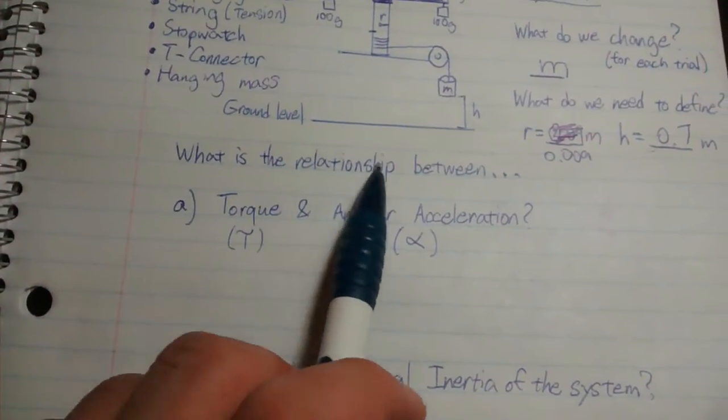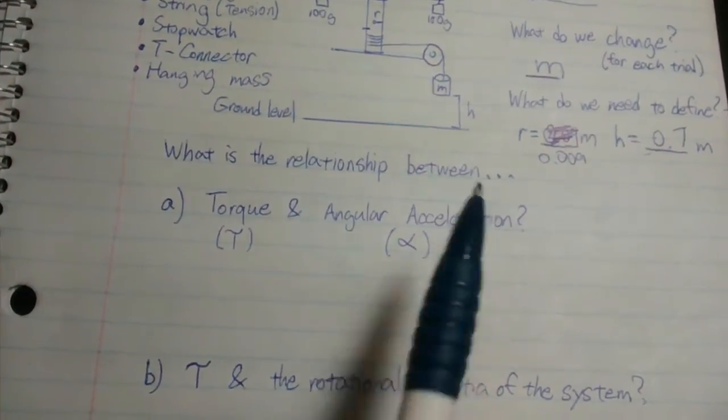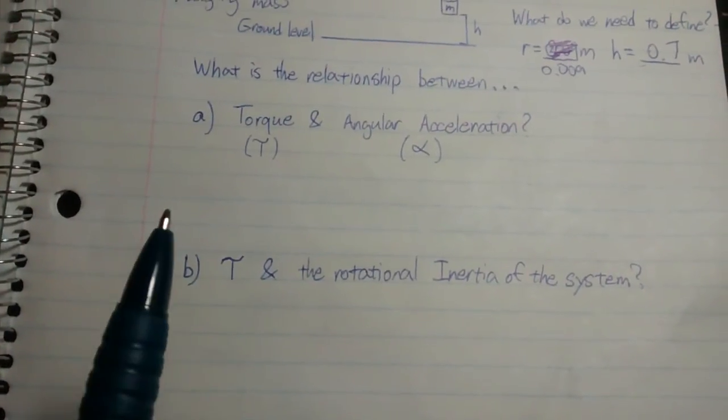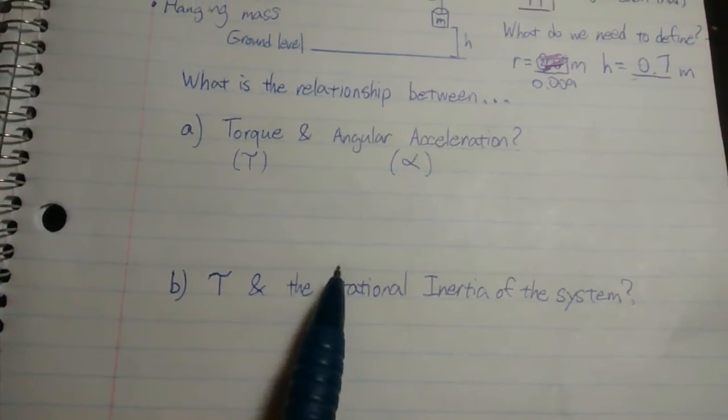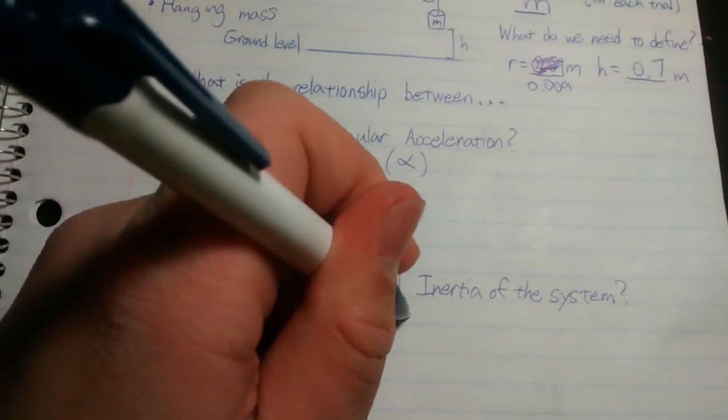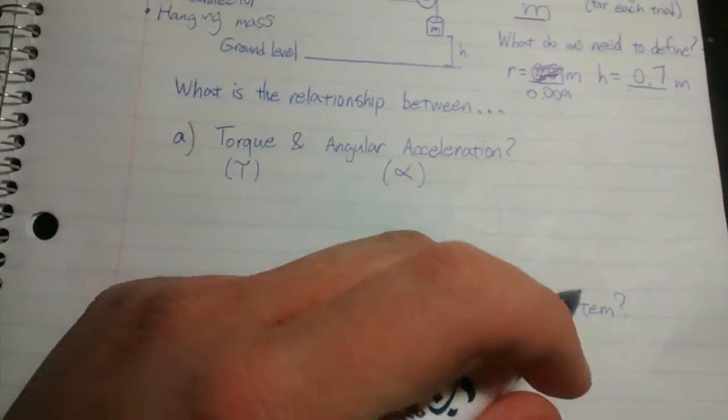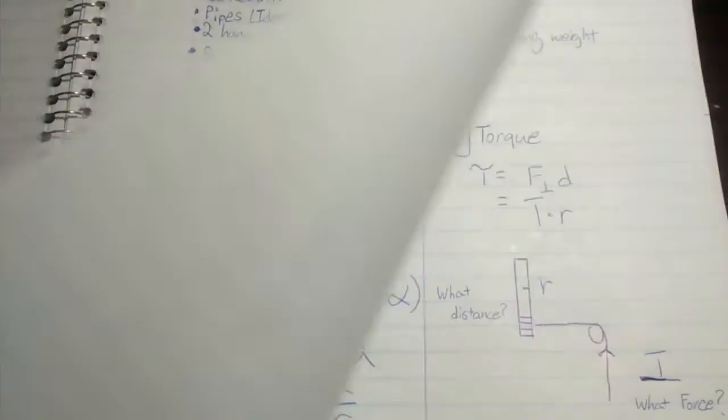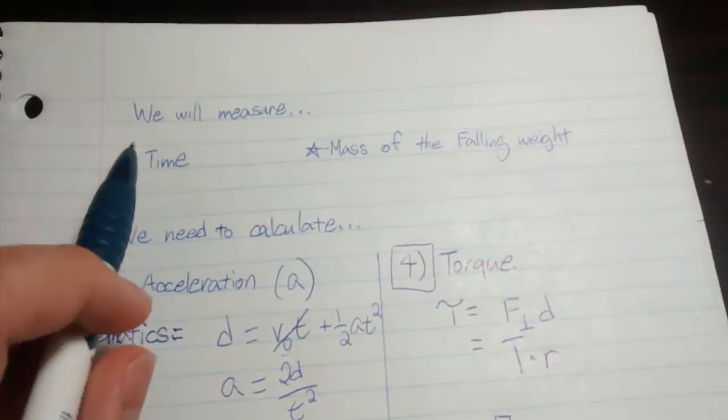Our question today is: what is the relationship between torque and angular acceleration? And the second question is: what is the relationship between torque and rotational inertia (I) of the system? First, we need to measure time and mass.